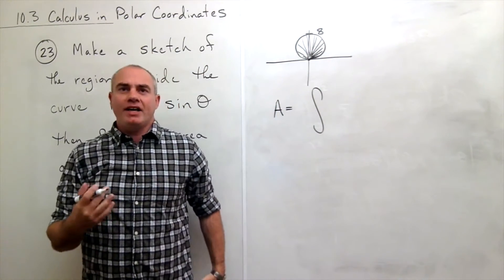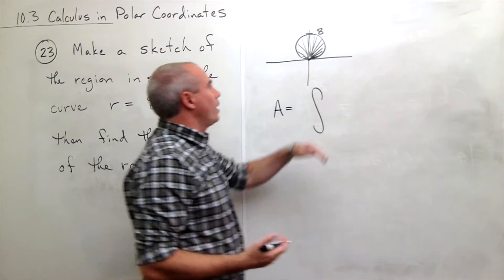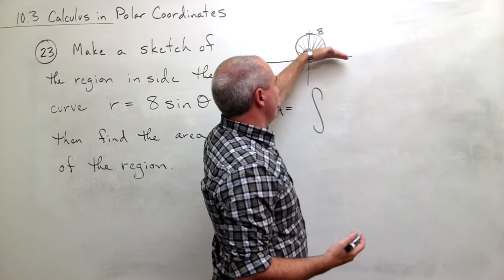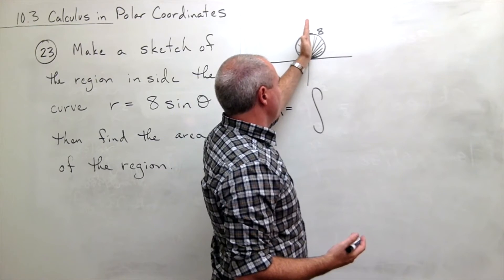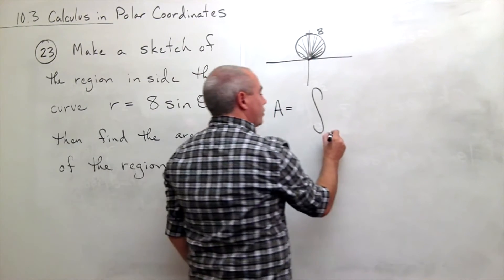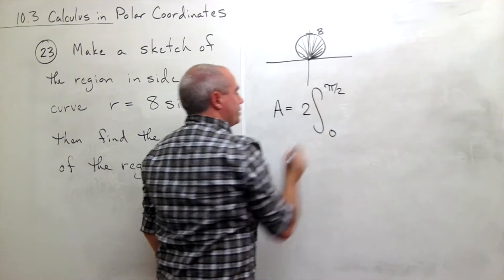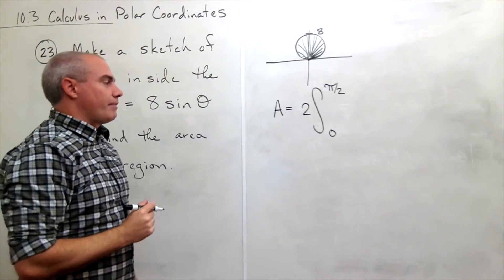But again, if I can make this easier on myself, why not? And so what I'm going to do is I'm just going to integrate from 0 to pi over 2 and then I'm going to double it. Okay, so I'm going to integrate this thing from 0 to pi over 2 and then I'm going to double that amount.